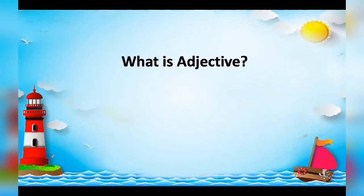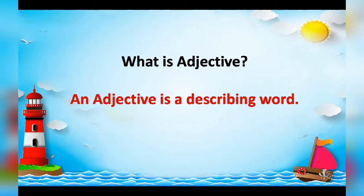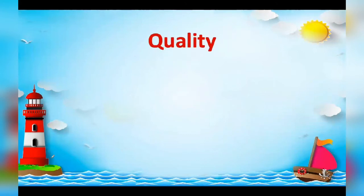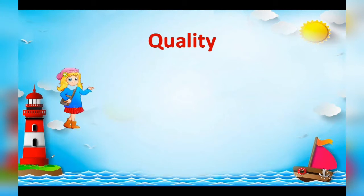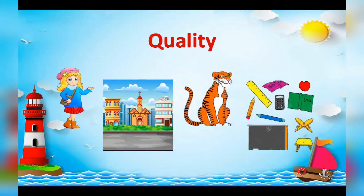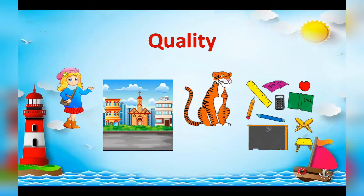Do you know what is an adjective? An adjective is a describing word. It describes the quality of a person, place, animal or thing. Adjective is a word that describes the quality of a noun. For example: a beautiful girl, a nice place, a dangerous animal, a yellow scale, a sharp pencil.